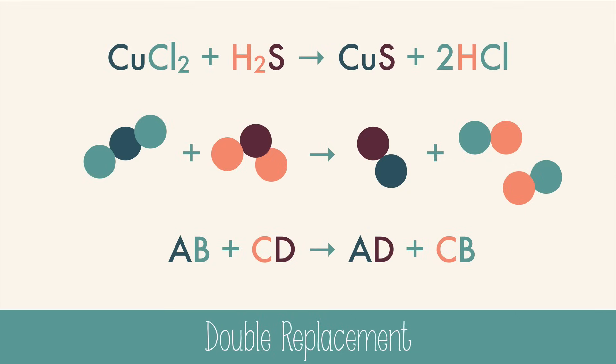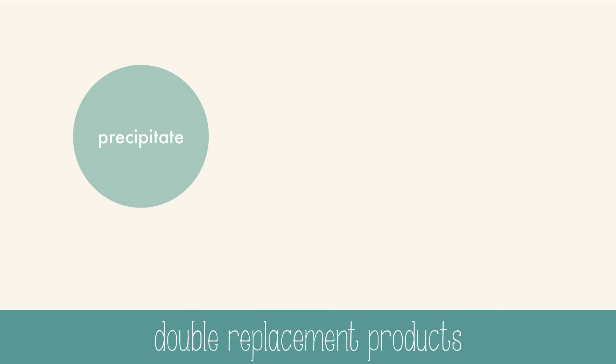Usually, a double replacement reaction creates one of three products. A precipitate, molecular substance, or a gas.